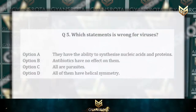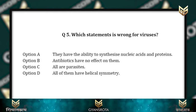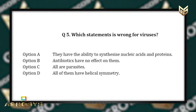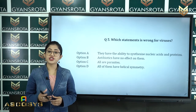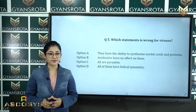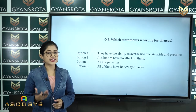Question number 5: Which statement is wrong for viruses? Option A they have the ability to synthesize nucleic acids and proteins, option B antibiotics have no effect on them, option C all are parasites, option D all of them have helical symmetry. This is from the chapter Biological Classification. We have to select the wrong statement.